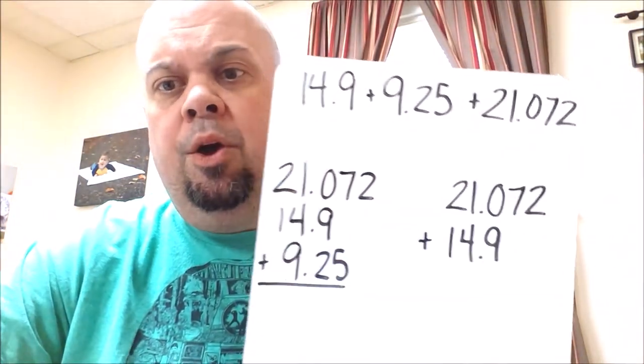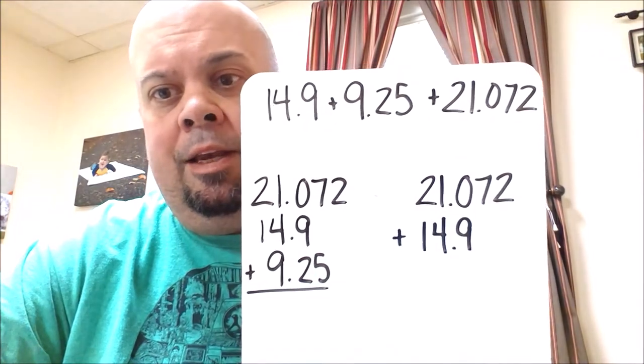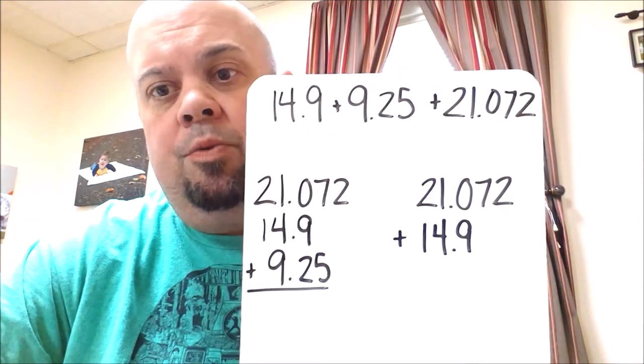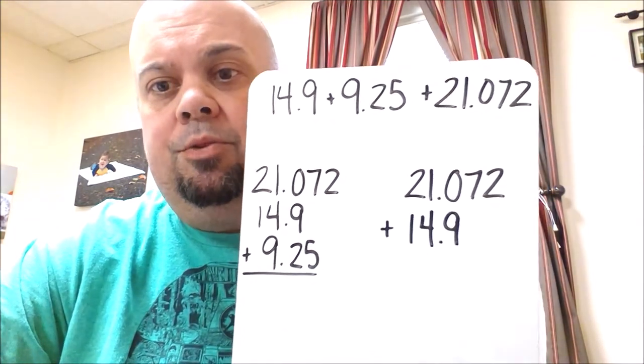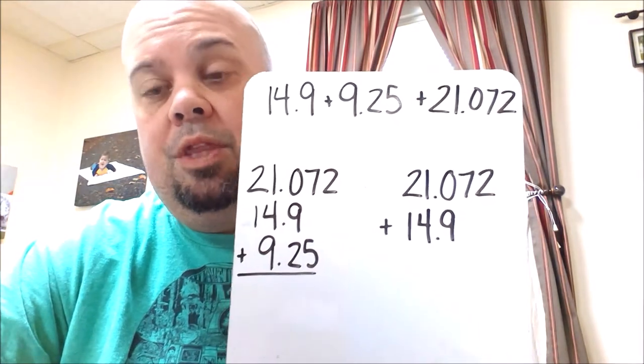Hello out there fifth graders. Today we are talking about adding numbers with decimals. So on the page that you have there's an example up above where we're adding 14 and 9 tenths plus 9 and 25 hundredths plus 21 and 72 thousandths.